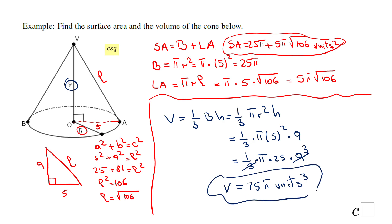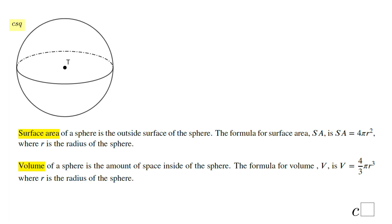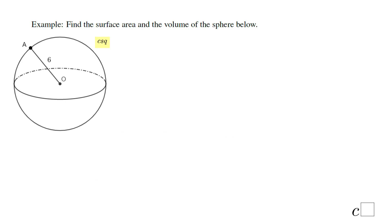The last shape I'll talk about is a sphere — a ball. The definition: it is the set of all points in space equidistant from a given point called the center. All points on the sphere are equidistant from the center, and this distance is the radius. The surface area formula is 4 pi r squared, and the volume formula is four-thirds pi r cubed.